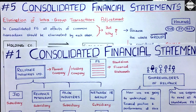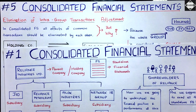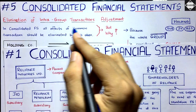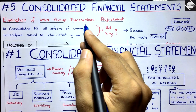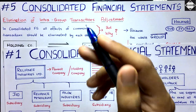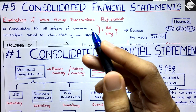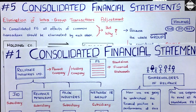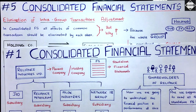Whatever transactions take place within this boundary among these parties are classified as intra-group transactions. There are many names for this — inter-company transactions, mutual owings, inter-company balances — you can call it whatever you want. But in this video series we are going to refer to it as intra-group transactions, because that's what our study module calls it.